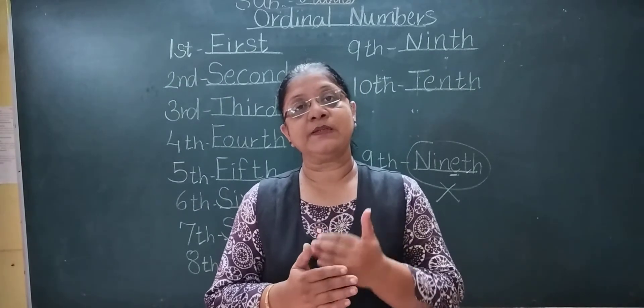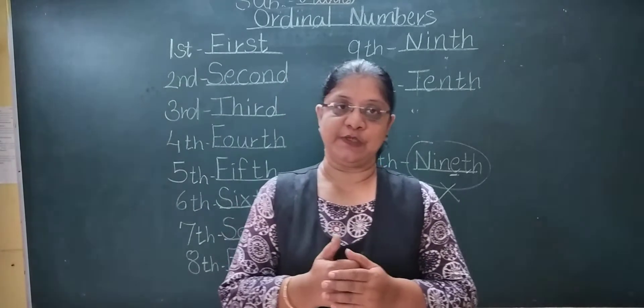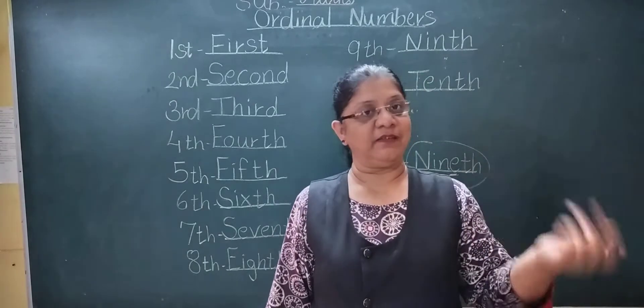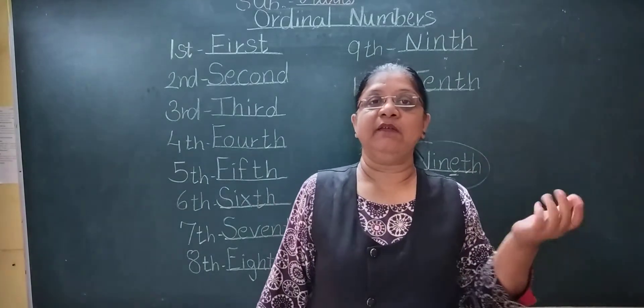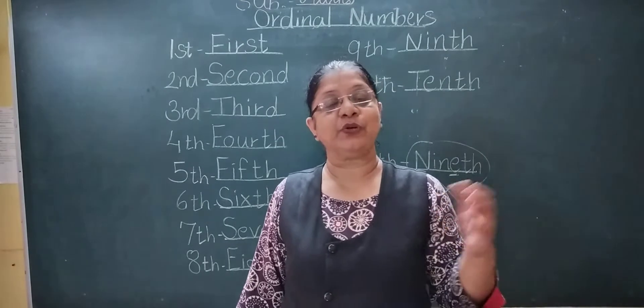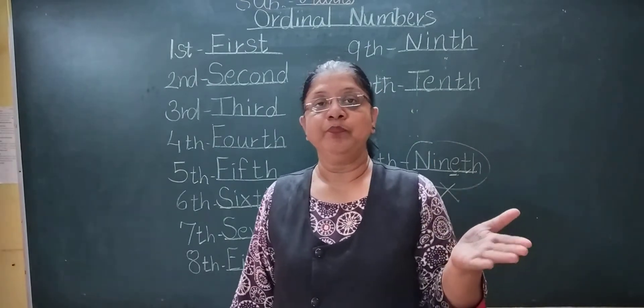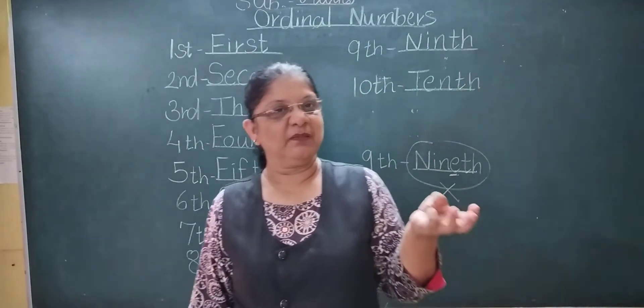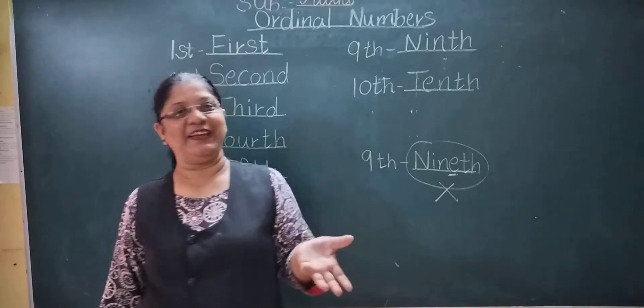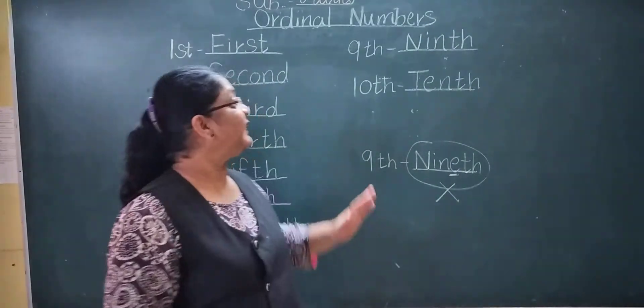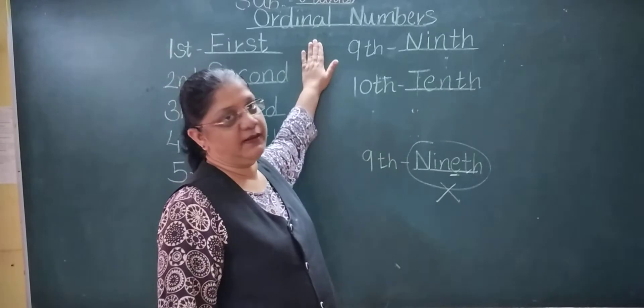Ordinal numbers mostly used in sports. We say now, I came first in running race, I came second in frog jump. I secured the third rank in the running race. That time we are using these ordinal numbers.